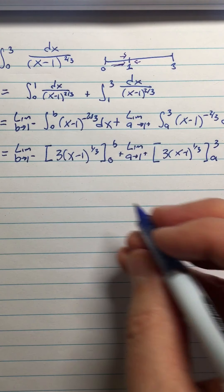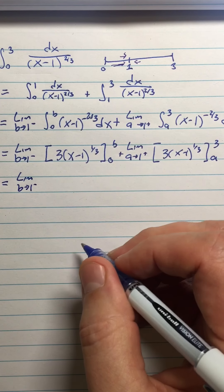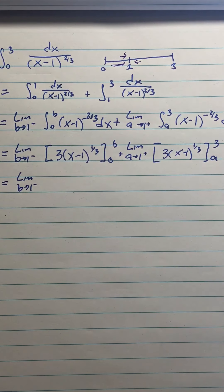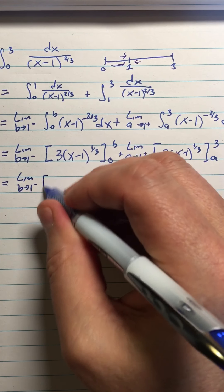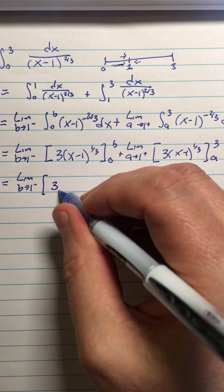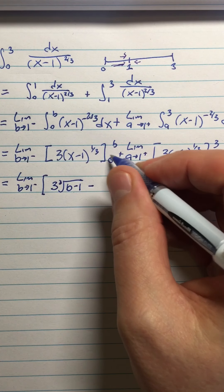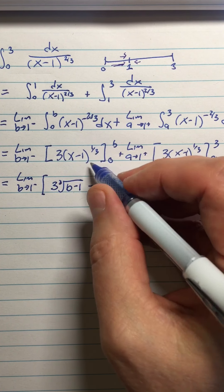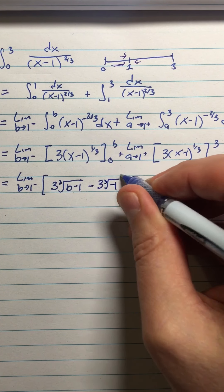All right, so that equals the limit as b approaches 1 from the left. Let's go ahead and plug in these values, and I'll also change the 1/3 power to a cube root. So I'm going to have 3 times the cube root of (b-1) minus... When I plug in the 0, I'm going to have 3 times the cube root of negative 1.